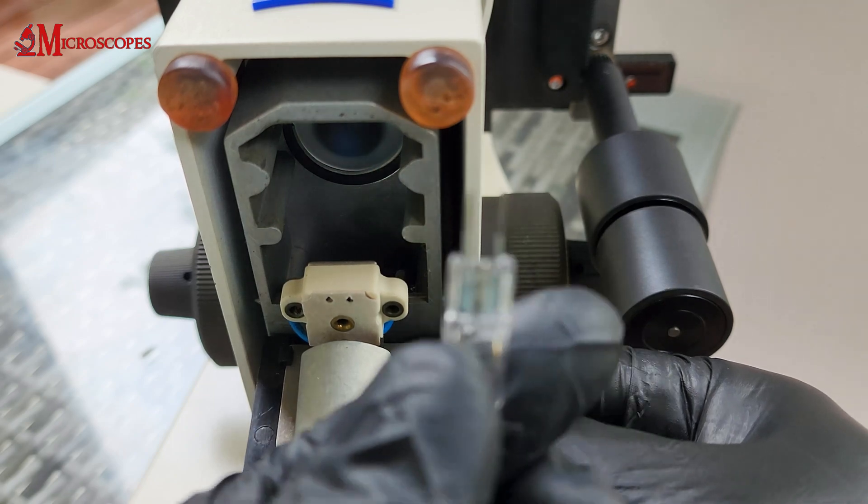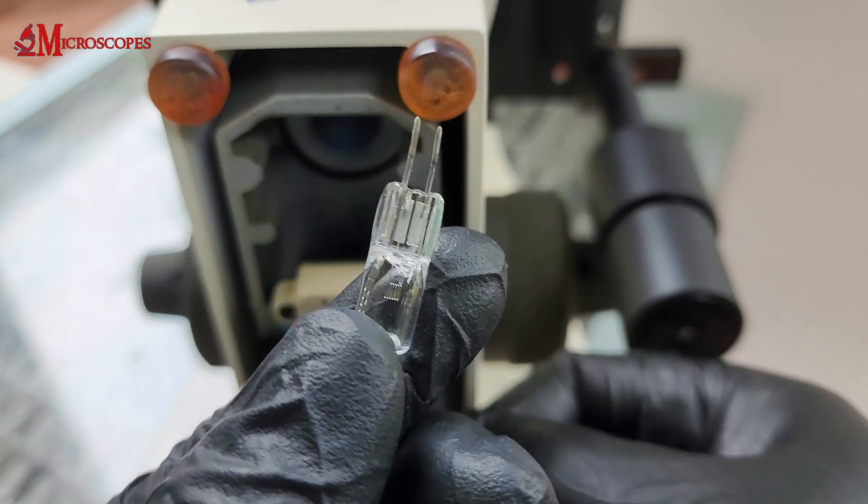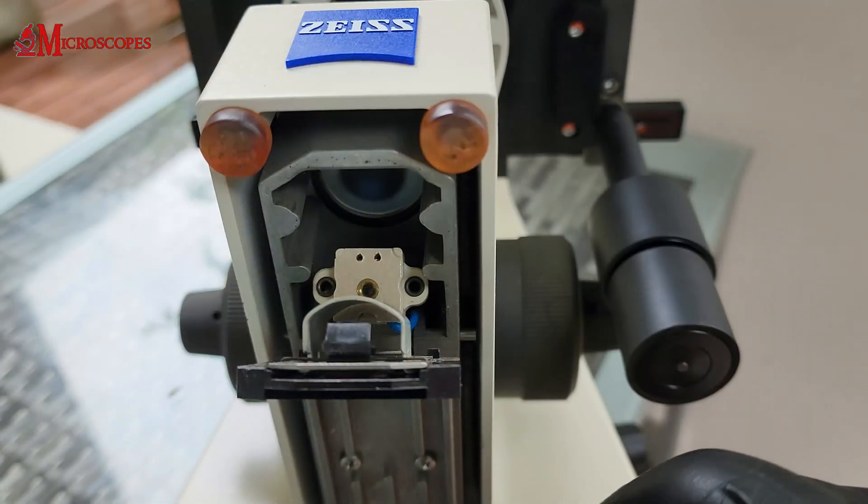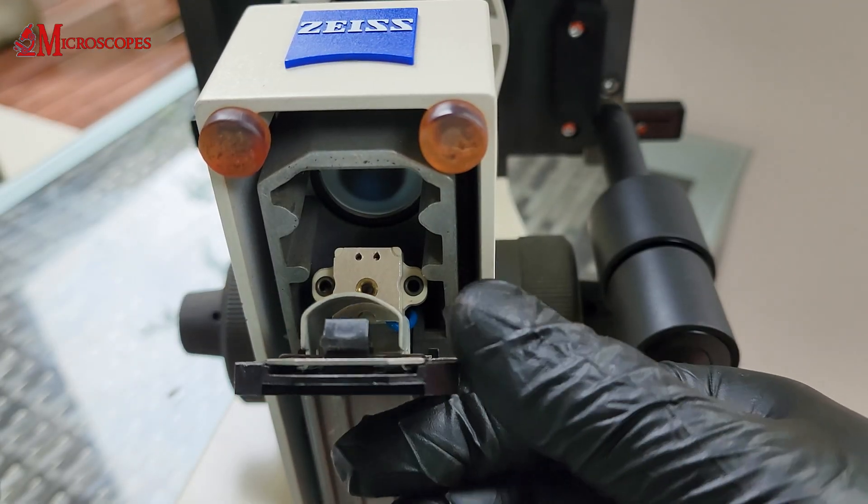Identify the location of the halogen bulb on your microscope. It is usually positioned near the base of the microscope. There may be a cover or access panel that needs to be removed to access the bulb.